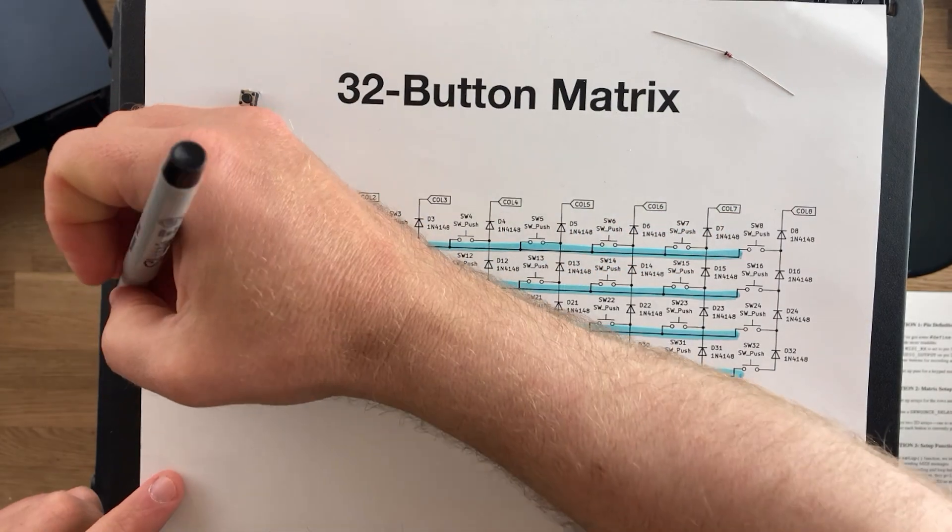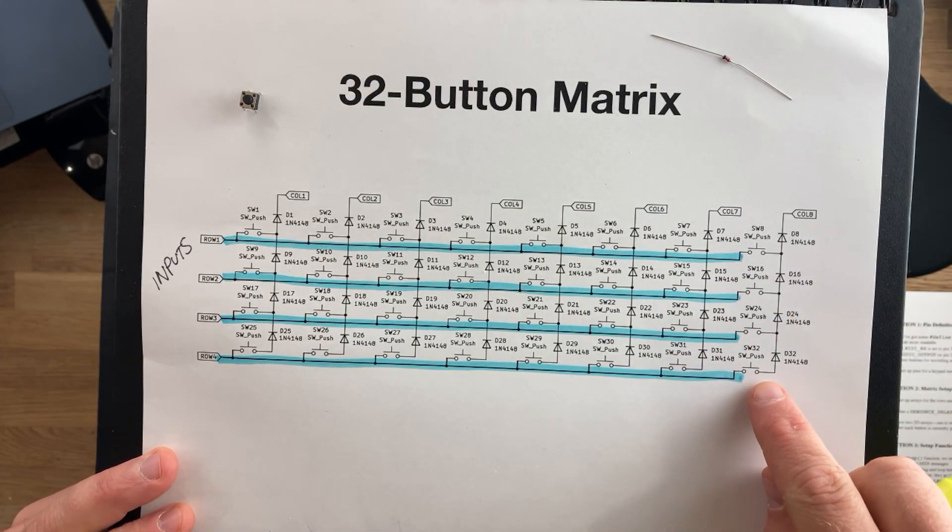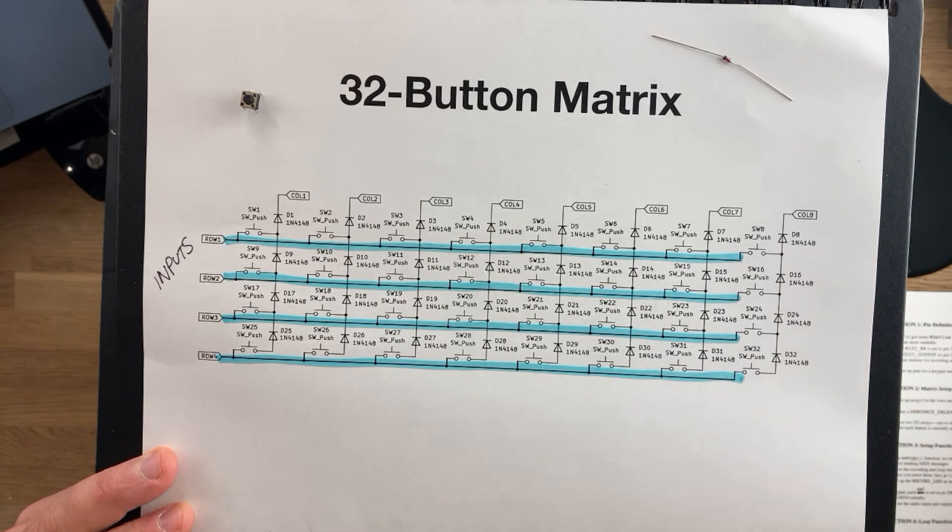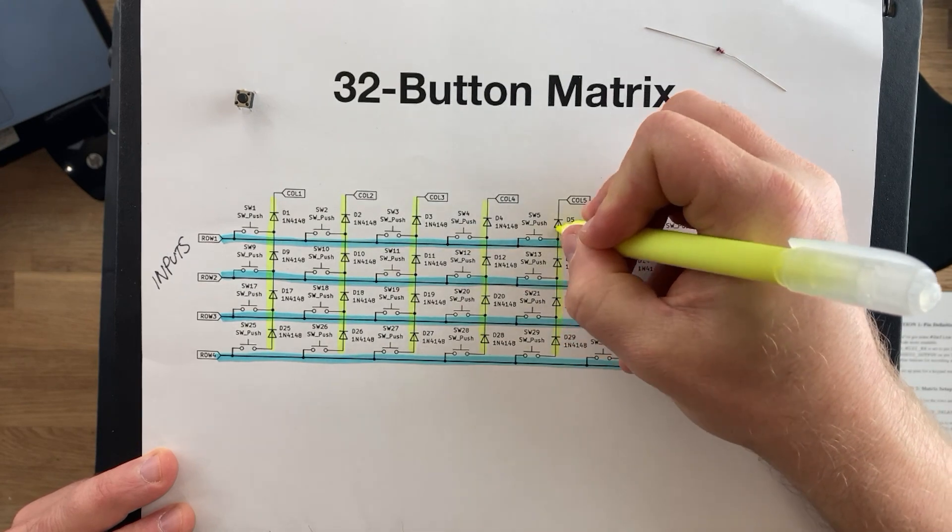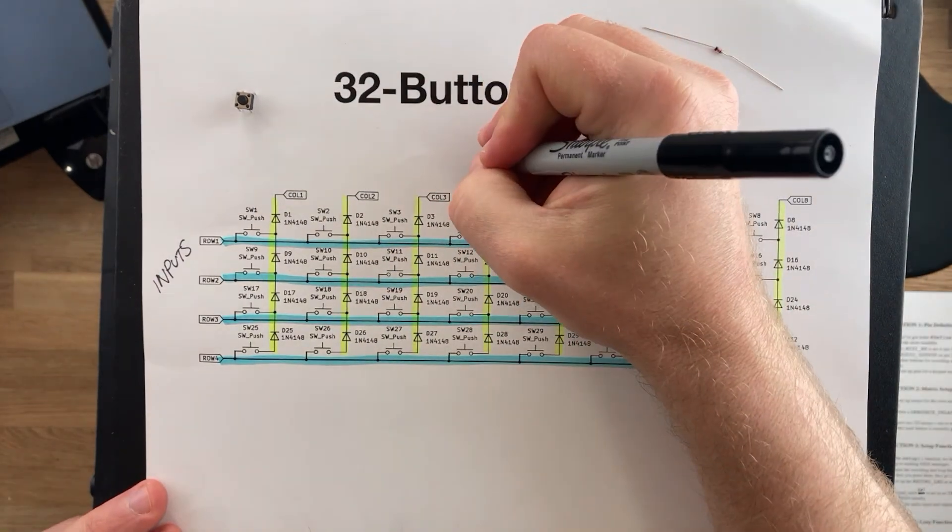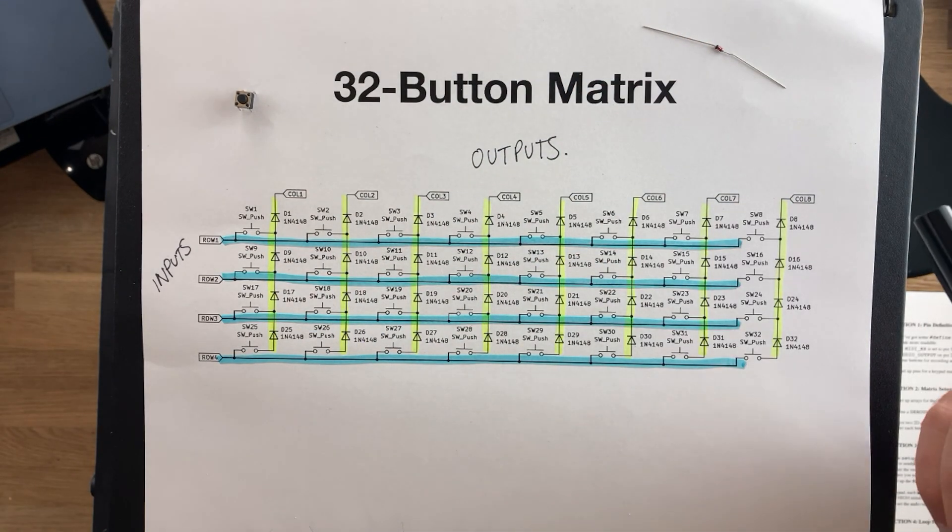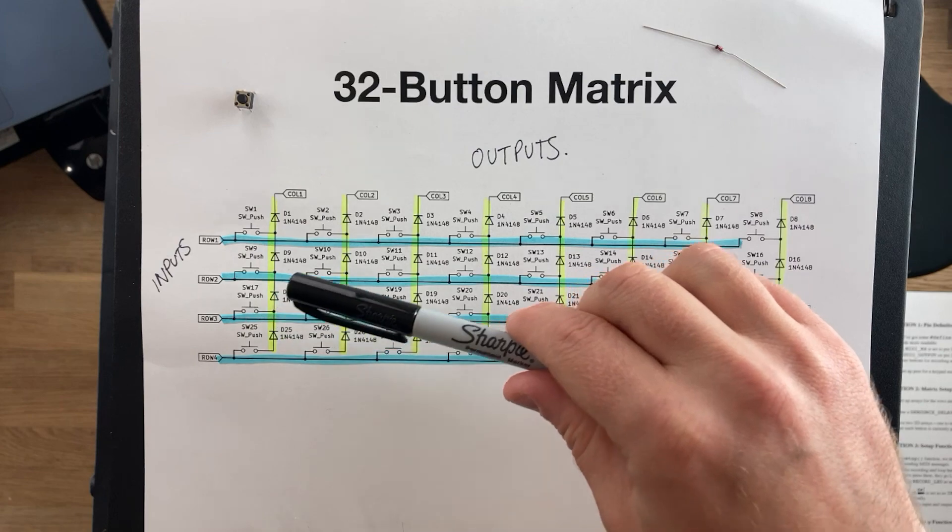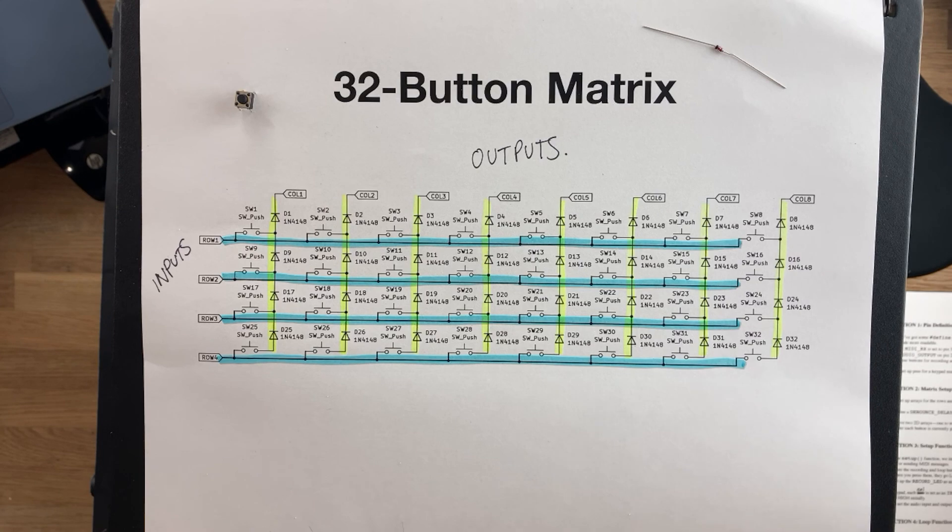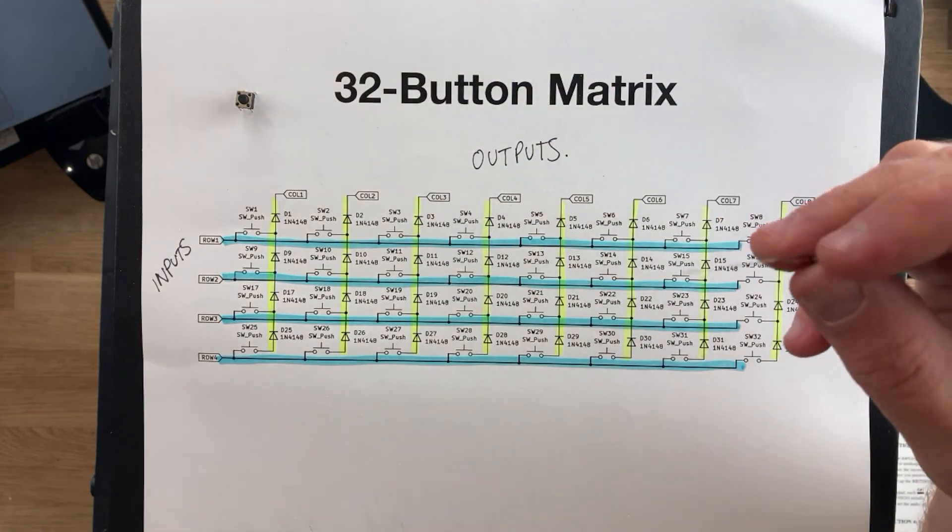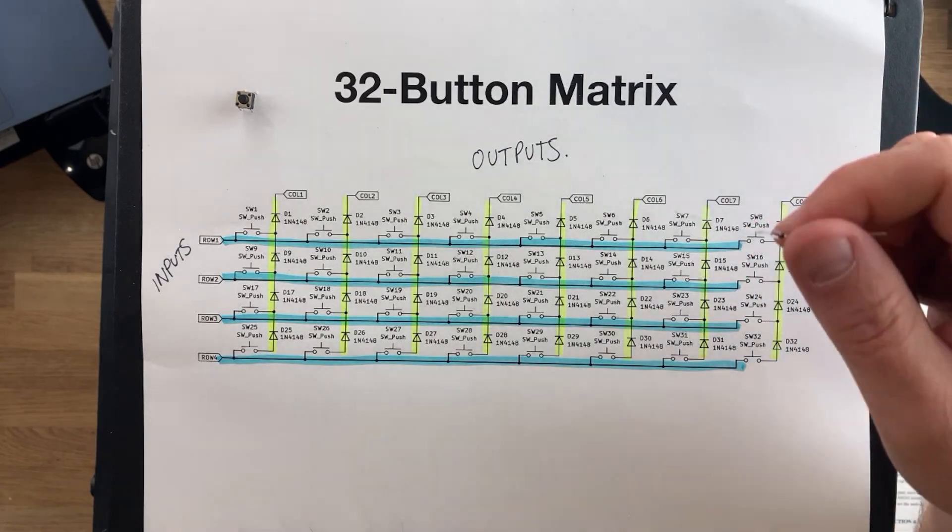These rows are configured at the microcontroller as inputs. Then we take the other leg of the button and we're going to solder a diode to it. We're going to form that into our eight columns like so. These are going to be our eight columns connected with our diodes. And these are configured at the microcontroller as outputs. Each of these columns are going to have voltage across it. And when the buttons are pressed, we're going to be able to determine at the inputs which button is being pressed based on the voltage that is coming across the button. And for the diodes, we're just going to use the regular small signal diodes. In my case, they are 1N4148 diodes.